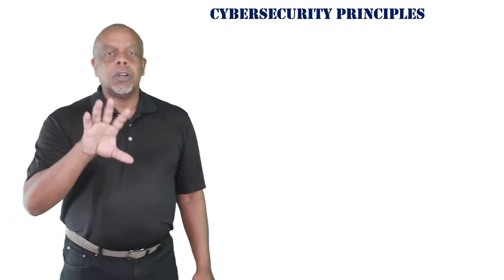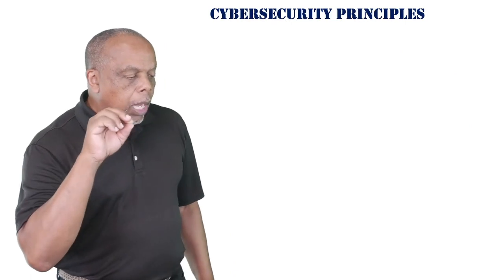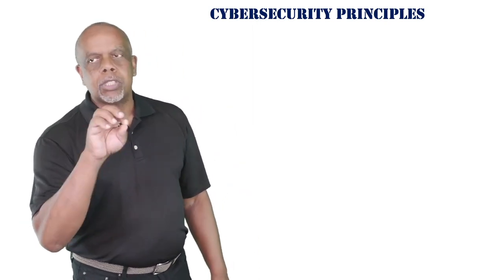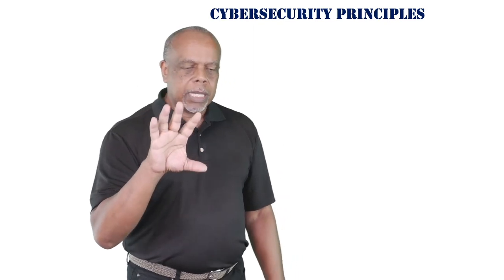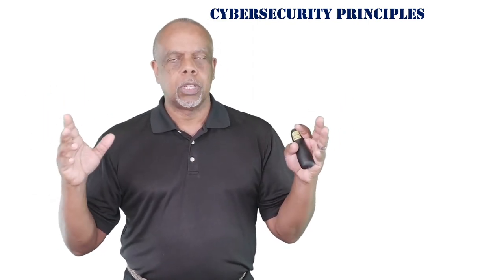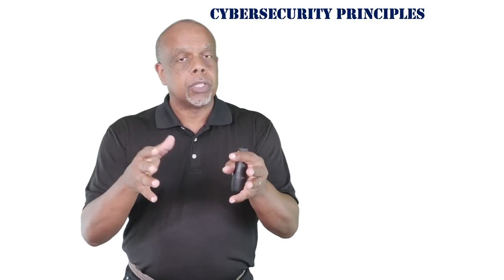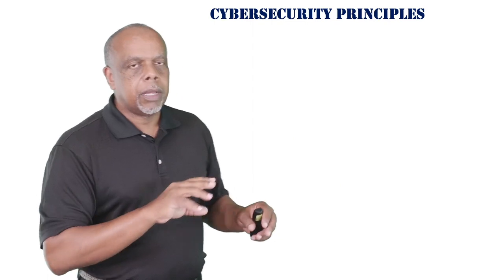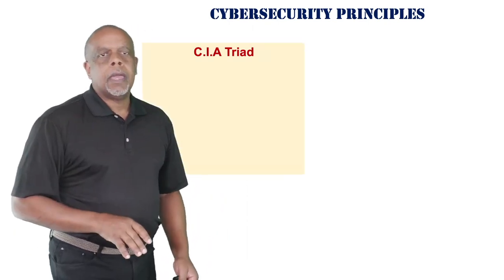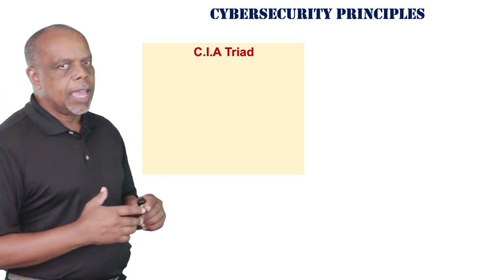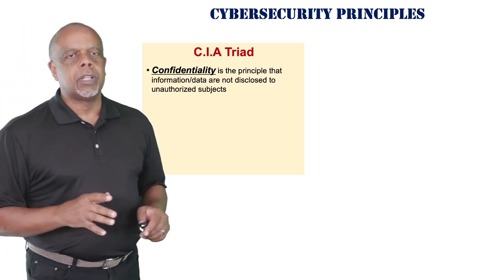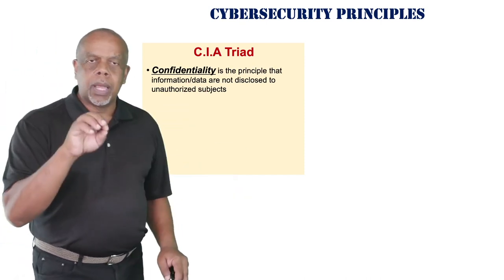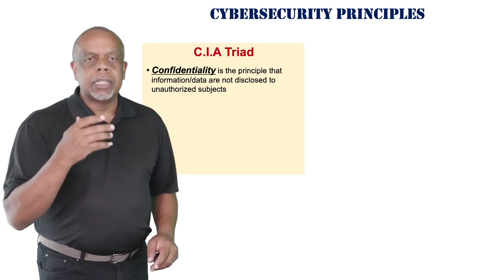So how do we mitigate risk? We use our cybersecurity principles. If you capture these core concepts, everything else makes sense from a cybersecurity perspective. If you're studying for a certification like Security+, these core things are what everything else stems from. We're going to talk about the CIA triad: confidentiality, integrity, and availability.